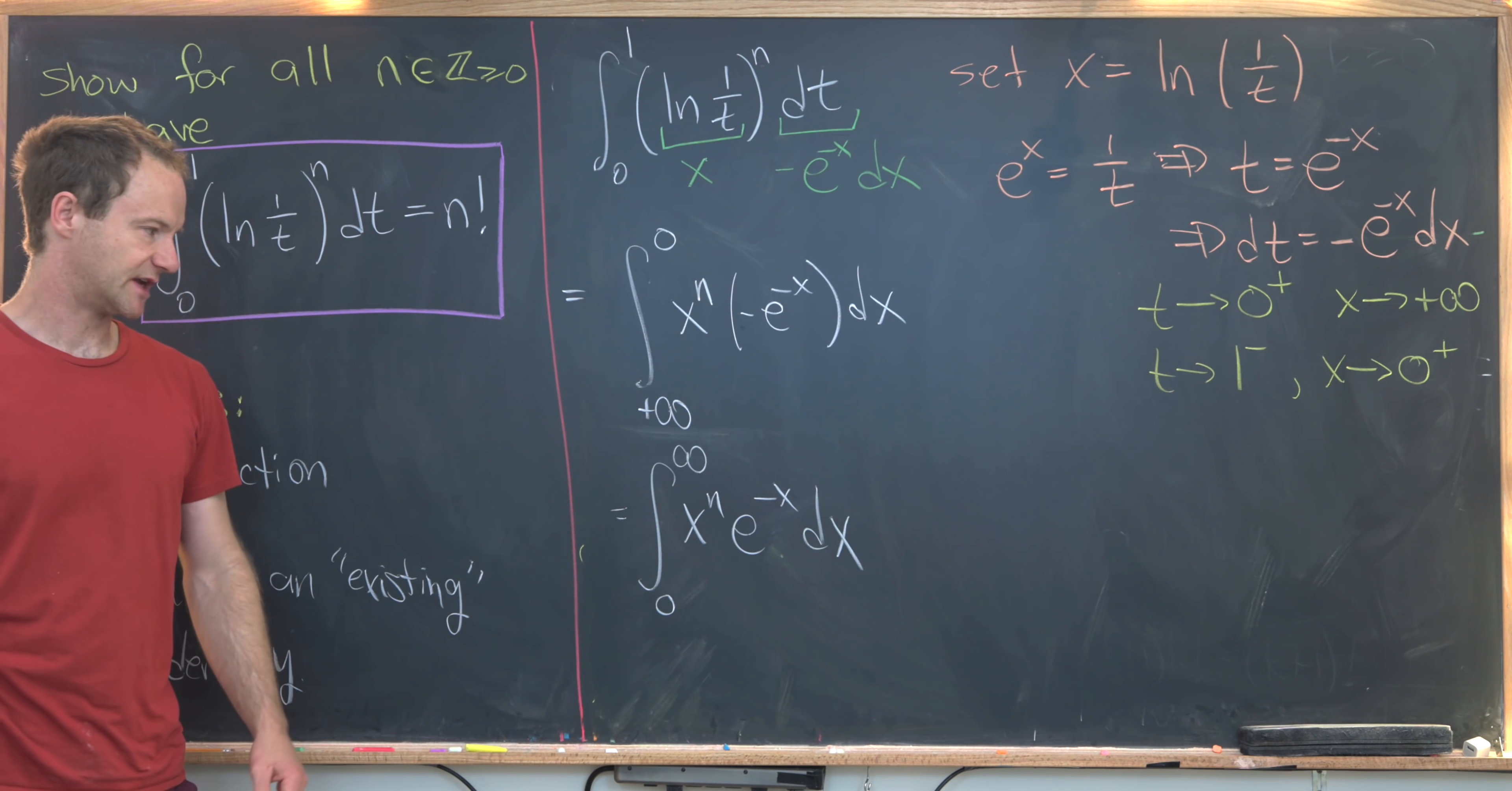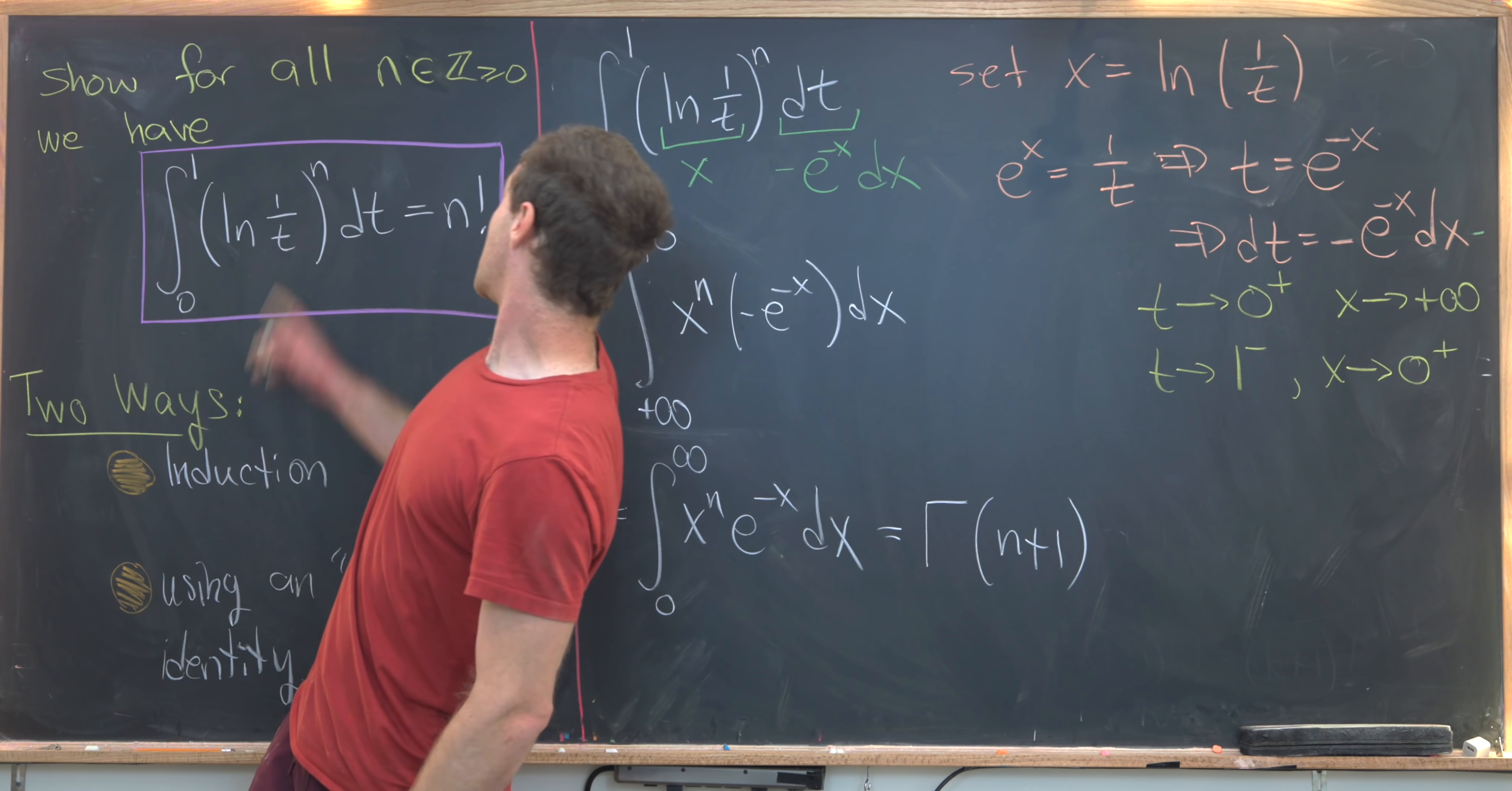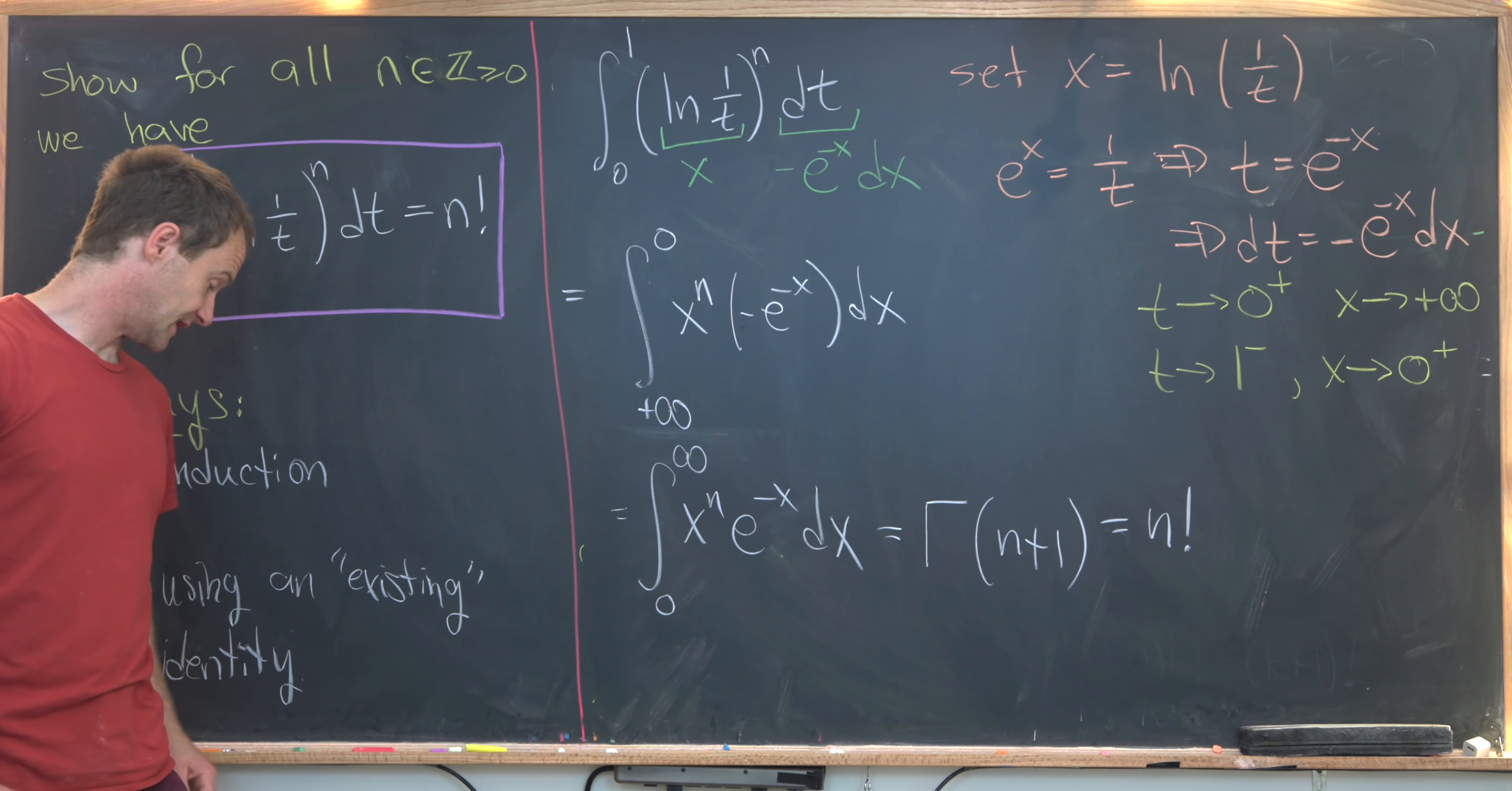Now we've got a couple of strategies. We could finish this with induction, but this is a well-known integral formula for the gamma function. In fact, this is the gamma function evaluated at n plus 1. But the gamma function evaluated at n plus 1, where n is a non-negative integer, is in fact n factorial. And so that finishes off the proof of this identity using the gamma function.